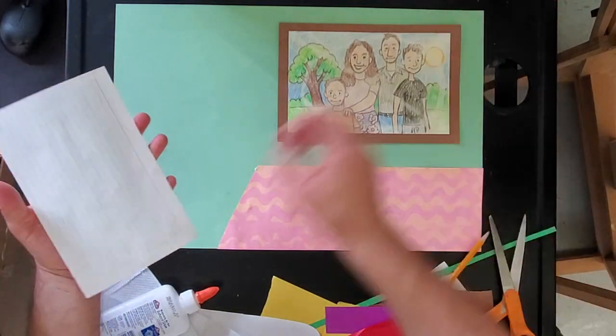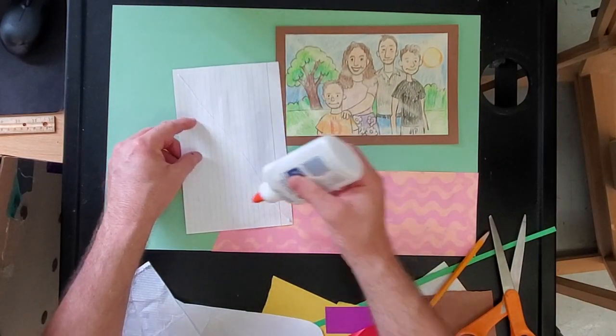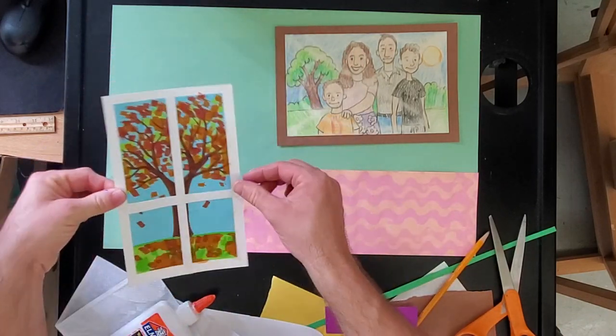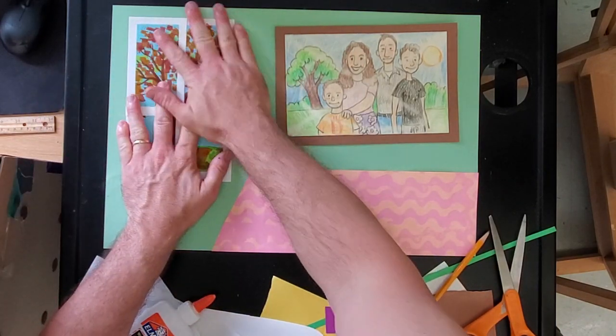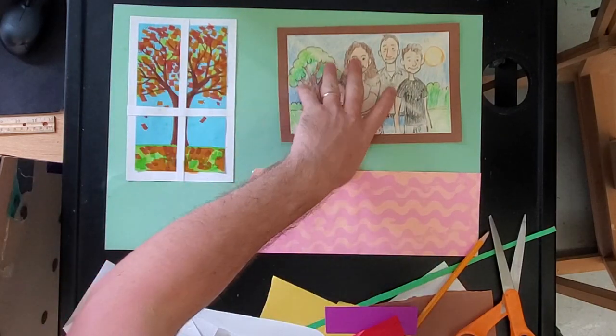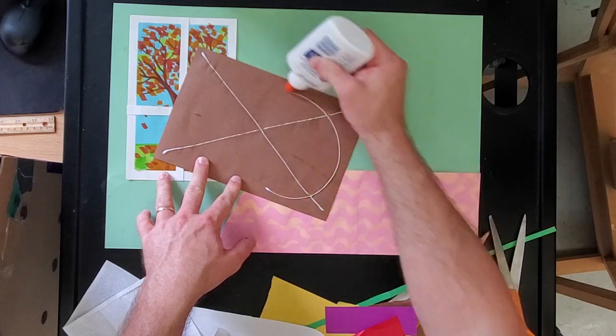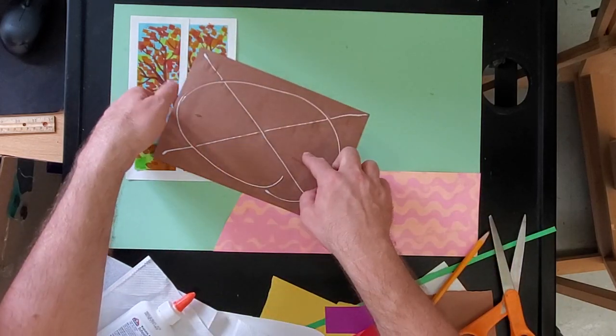The next thing I want you to do, I want you to glue your window on the left hand corner. Leave some green on the top and on the left. Next is glue your family portrait in the top right corner of your paper. Leave some background paper showing on the top and on the right.